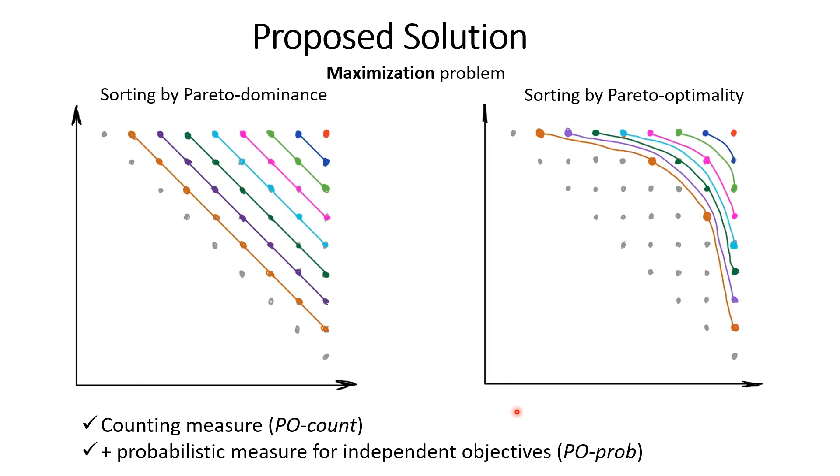We discussed how Pareto optimality can be calculated using counting measure. In case of independent objectives, it can be replaced with a probabilistic measure. The two versions of the algorithm are referred to as PO-count and PO-prob respectively.